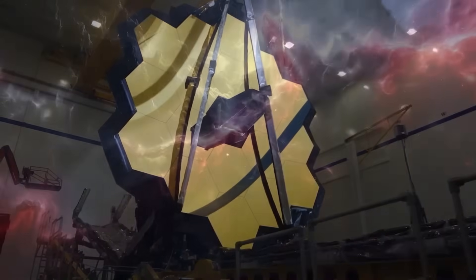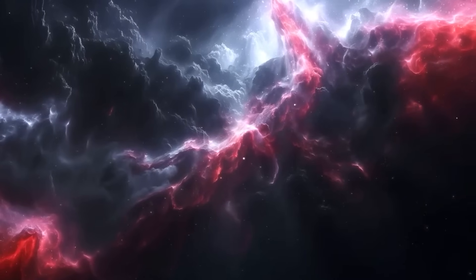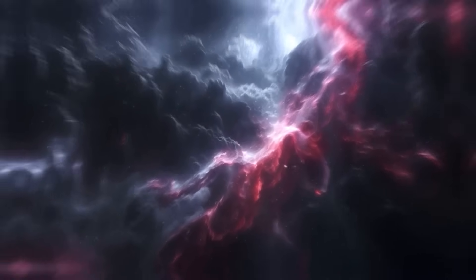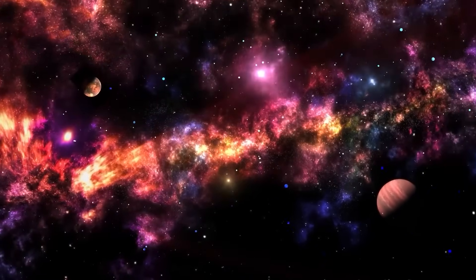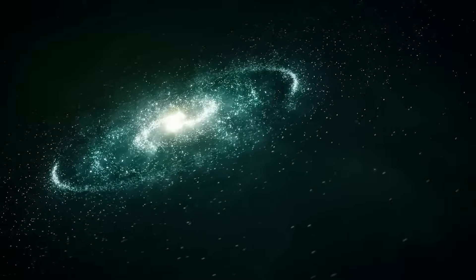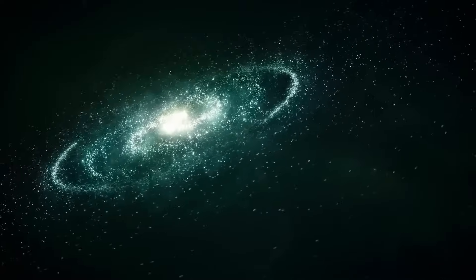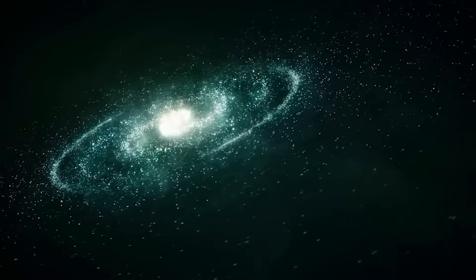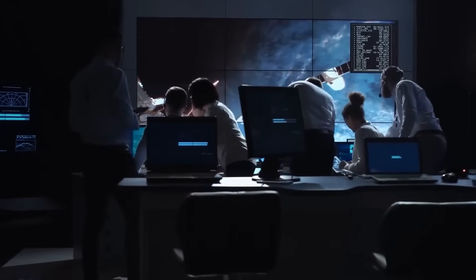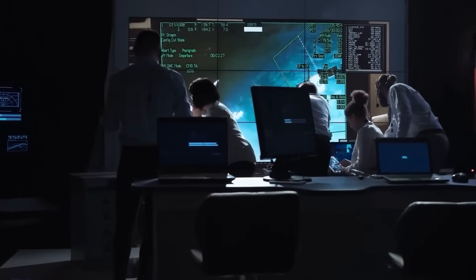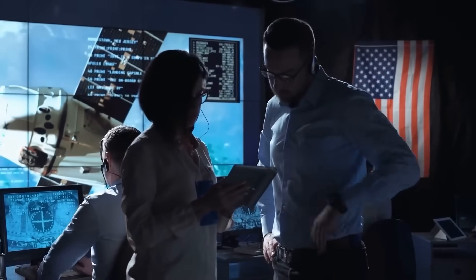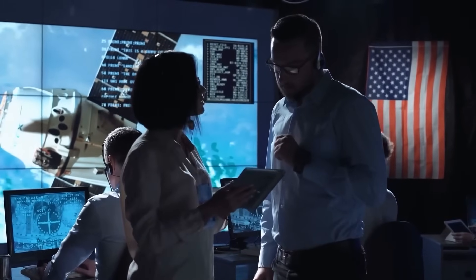One of the James Webb telescope's primary missions is to uncover the first light objects, galaxies and stars that formed in the initial few hundred million years after the Big Bang. These ancient structures hold the key to understanding the universe's infancy. Webb has already detected some of the faintest and most distant galaxies ever observed, their light traveling for over 13 billion years to reach us. These findings are helping scientists reconstruct the early stages of cosmic evolution, providing insights into how matter coalesced into stars and galaxies.